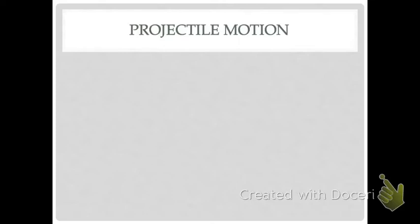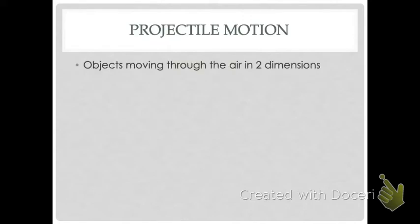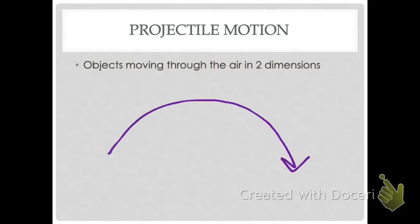We're going to start into projectile motion, which was kind of our goal for the whole chapter. Projectile motion is anything that moves through the air in two dimensions — it's moving both in the x direction and the y direction at the same time. So it makes an exact arc pattern. It moves through the air in both the x direction and the y direction.